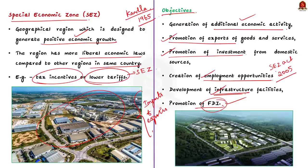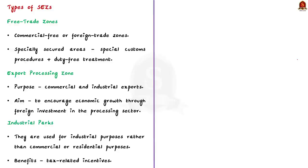The main objectives of special economic zones include the promotion of exports, generation of additional economic activity, promotion of investment in domestic industries, creation of employment opportunities, development of infrastructure, and promotion of foreign direct investment. There are many types of special economic zones. The important ones are free trade zones, export processing zones, industrial zones, and specialized zones.